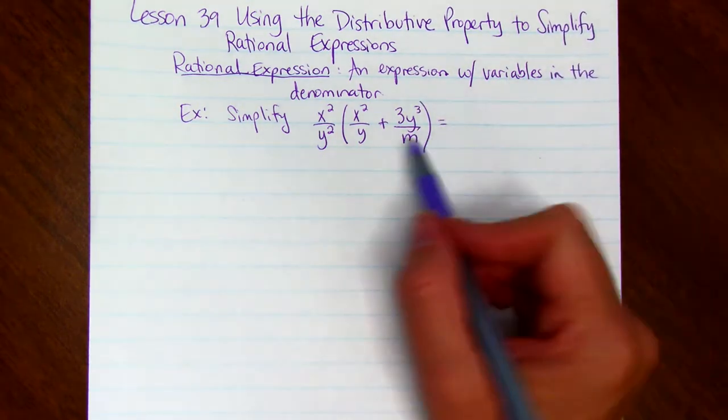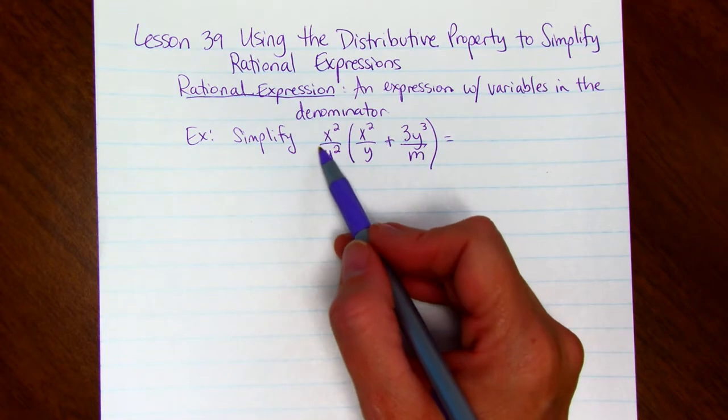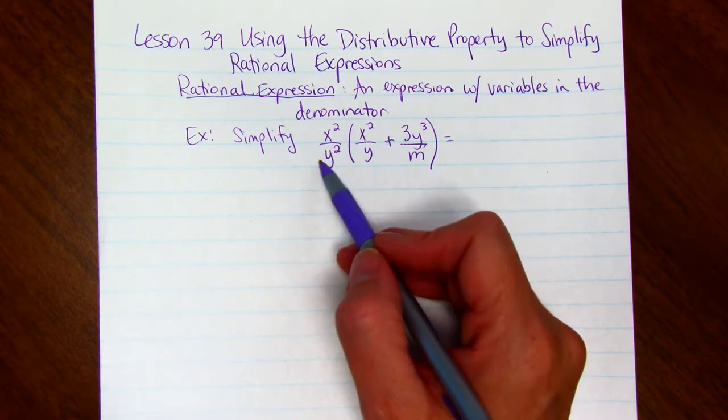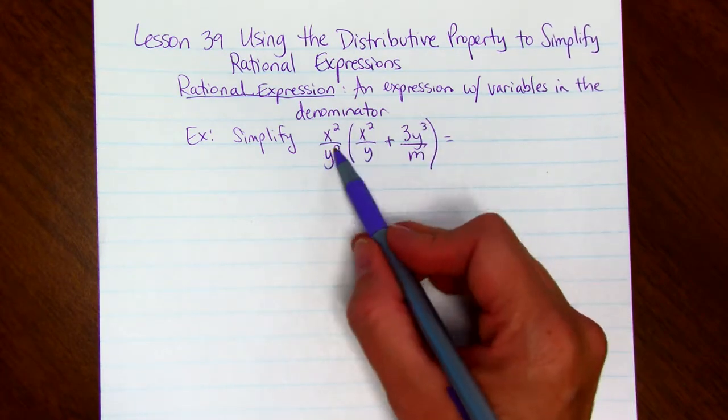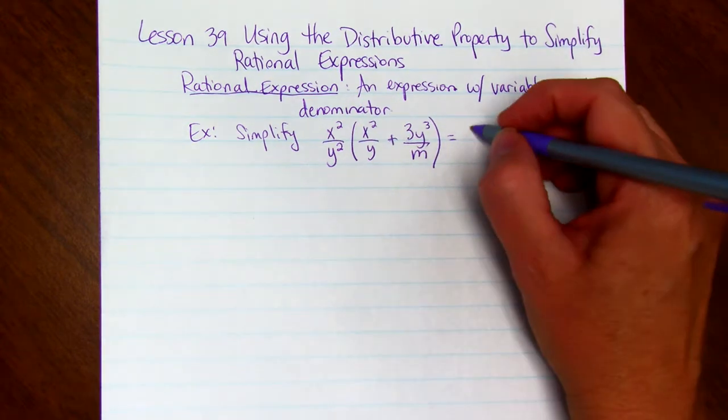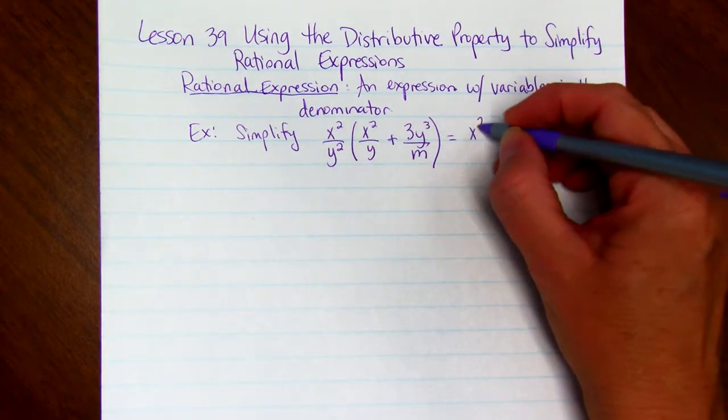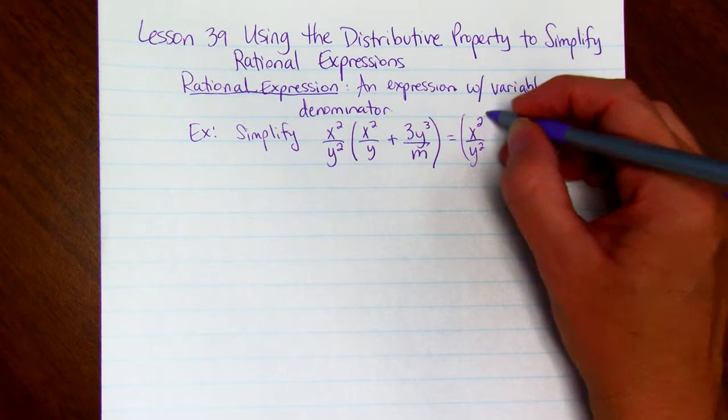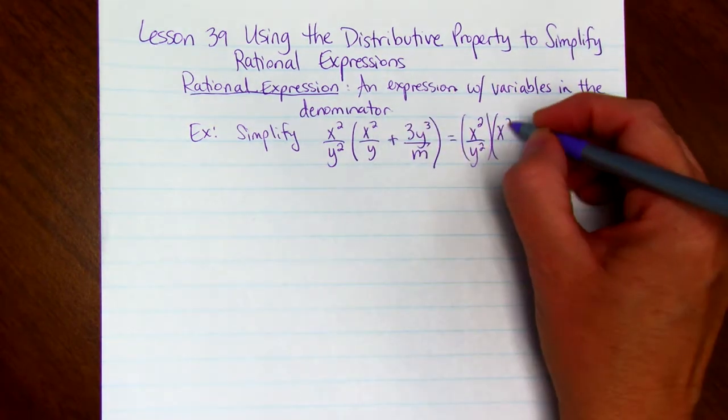So we're using the distributive property. We're going to take this factor on the outside, x squared divided by y squared, and we're going to times it by each of the addends on the inside. So we have x squared over y squared times the first one, x squared over y.